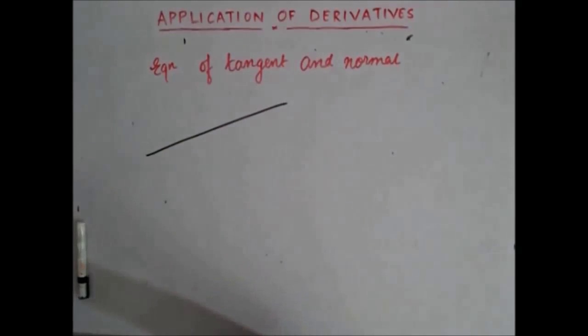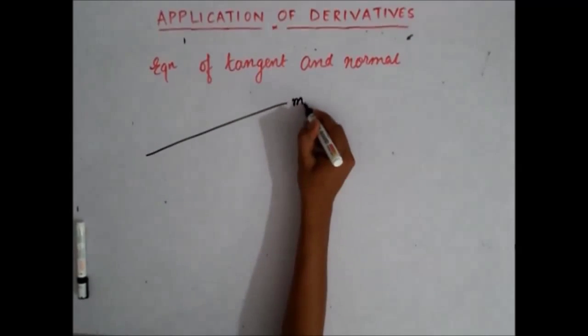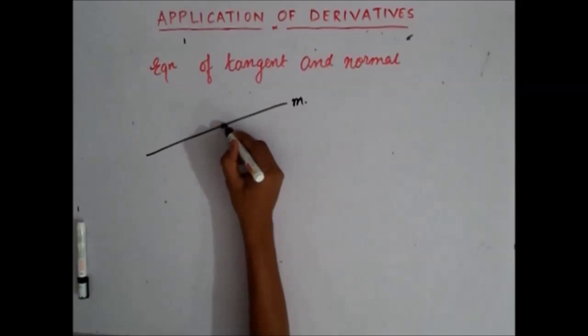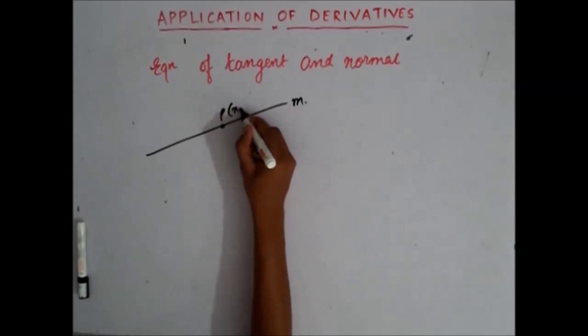You know that if you have a straight line whose slope is m and which passes through a point P given by (x1, y1).